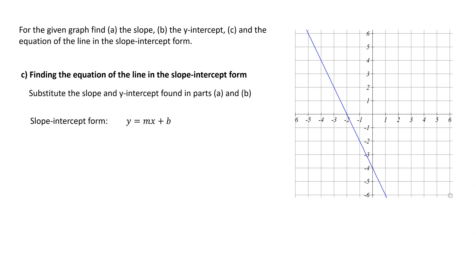Finally, to find the equation of the line, we will substitute the slope and y-intercept we have found in the previous parts into the equation of the line in slope-intercept form, which is y equals mx plus b. So, m equals negative 2 and b equals negative 4, substituted in the equation, will yield y equals negative 2x minus 4, and is the equation of the given line. Thanks for watching.